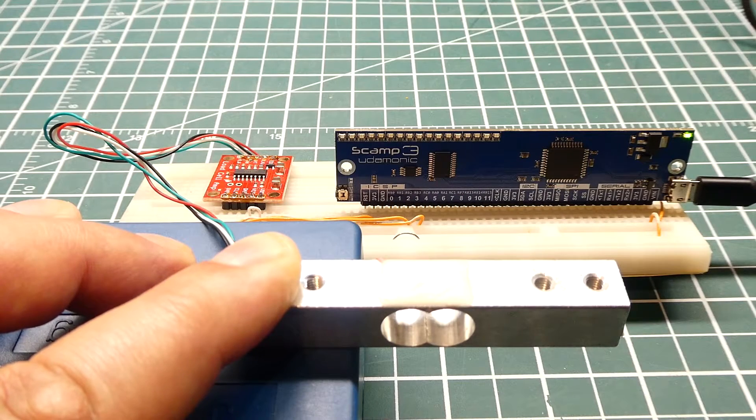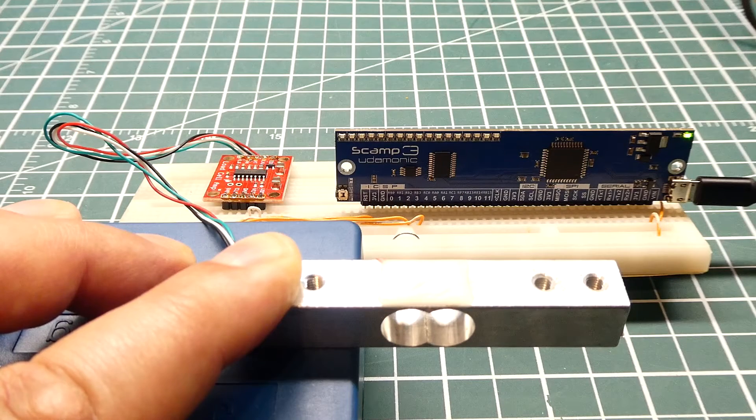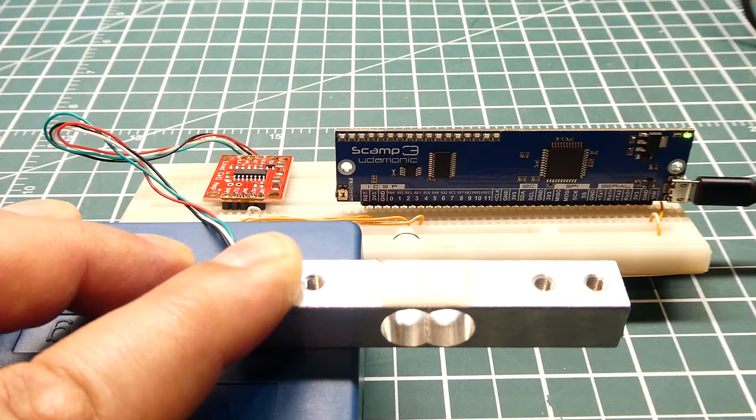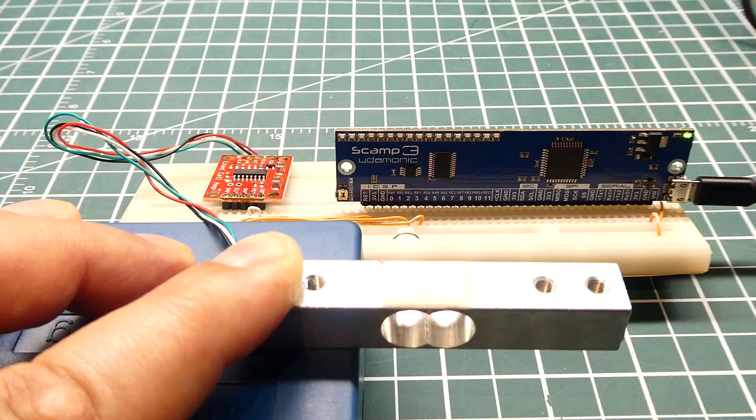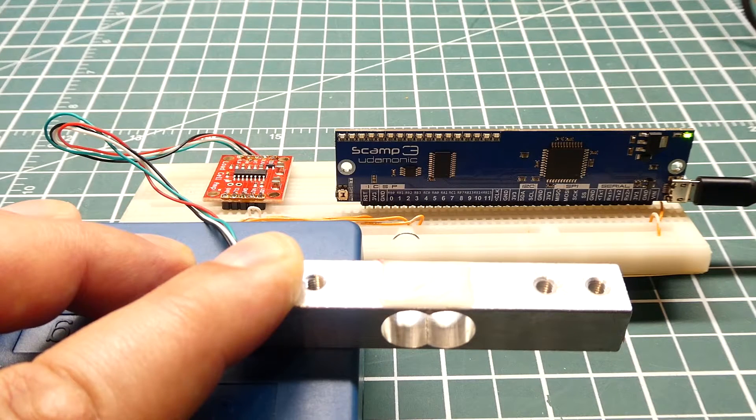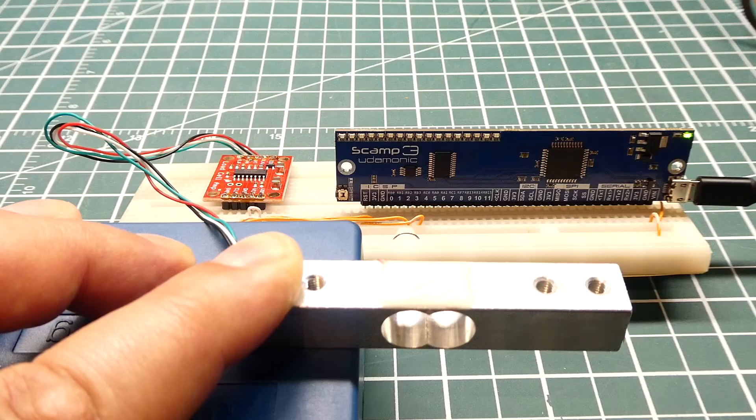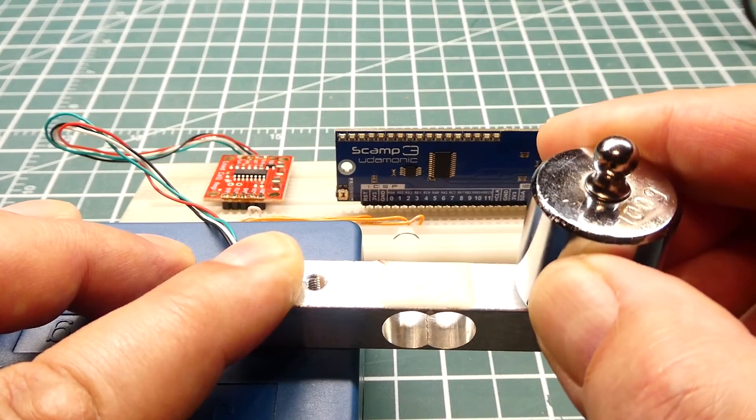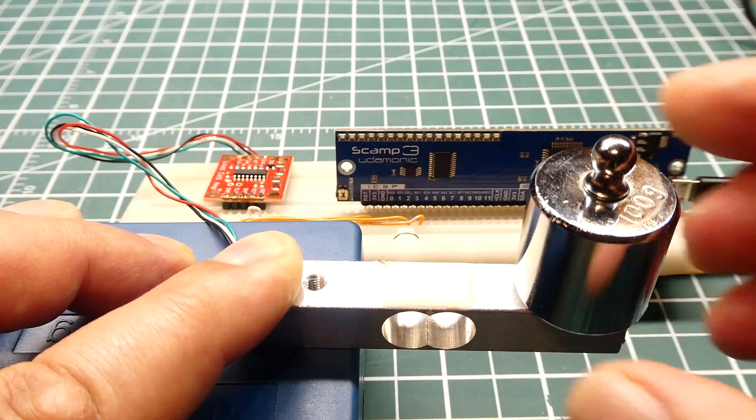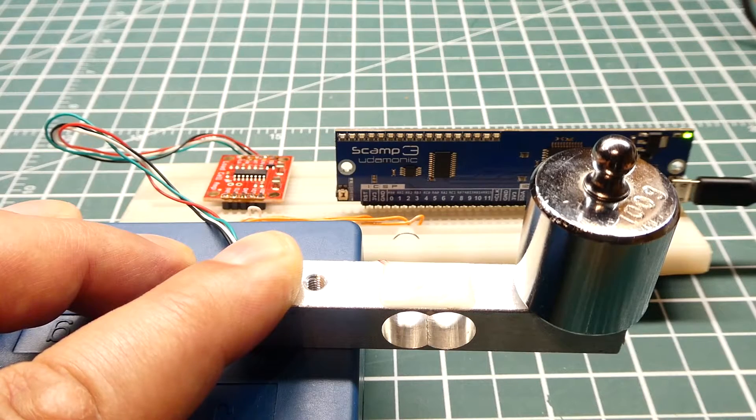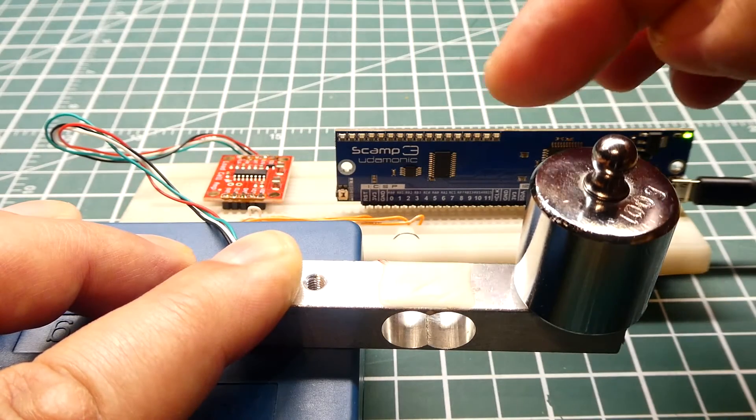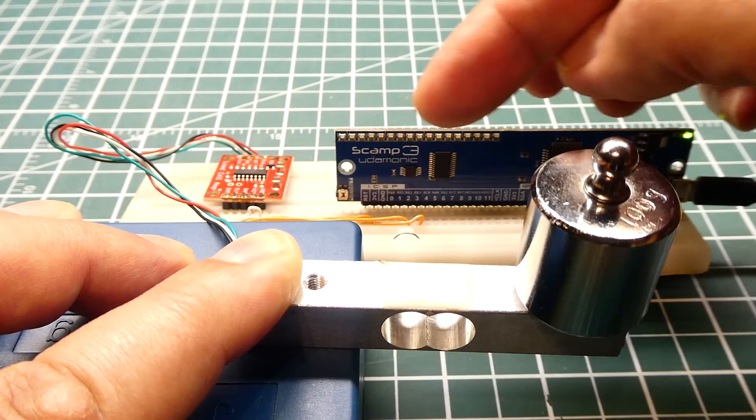Okay, I have my SCAMP3 board powered up and it's running some code which is reading the 24-bit analog to digital converter on board the HX711 breakout board. I have a hundred gram weight and I can apply that to my load cell. In my code I have a window from 100 grams to 1000 grams which will apply the LEDs from 100 grams to 1000 grams.